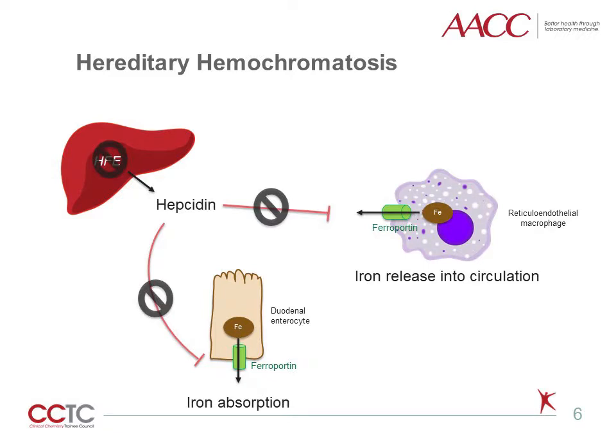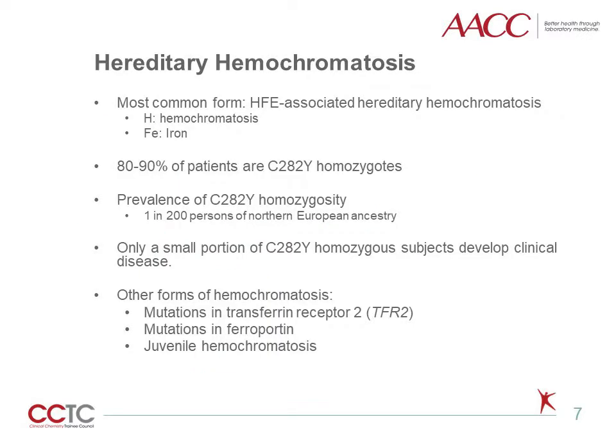However, in patients with hereditary hemochromatosis, mutation of HFE leads to decreased hepcidin expression. Inadequate hepcidin production will result in excessive iron absorption and release, subsequently causing iron overload. As I just mentioned, most subtypes of hereditary hemochromatosis are caused by HFE gene mutation, which regulates hepcidin expression. These forms are also called HFE-associated hemochromatosis.